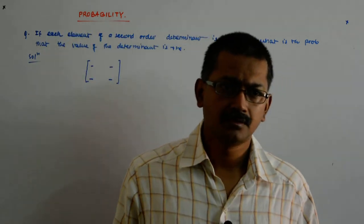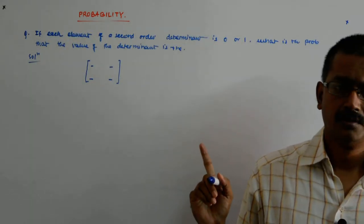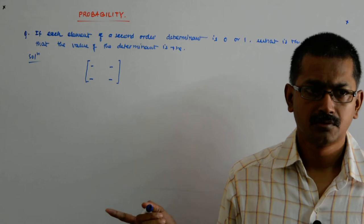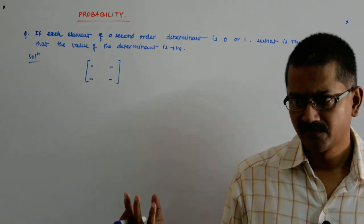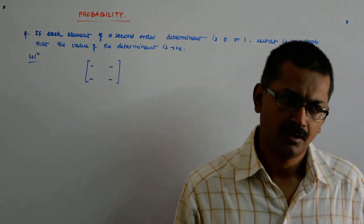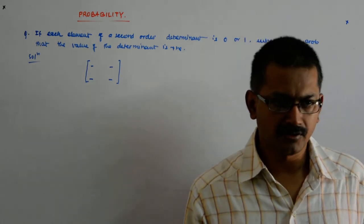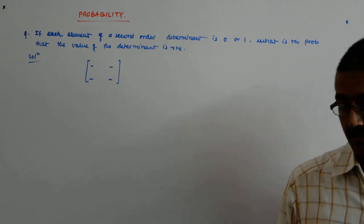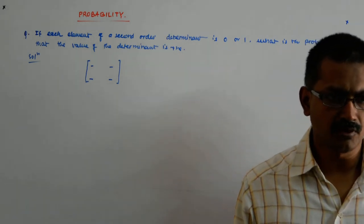And you have the freedom to put 0 or 1 with equal probabilities, so you are putting randomly, you can put 0 or 1. The probability of putting 1 or 0 is each equal to half.